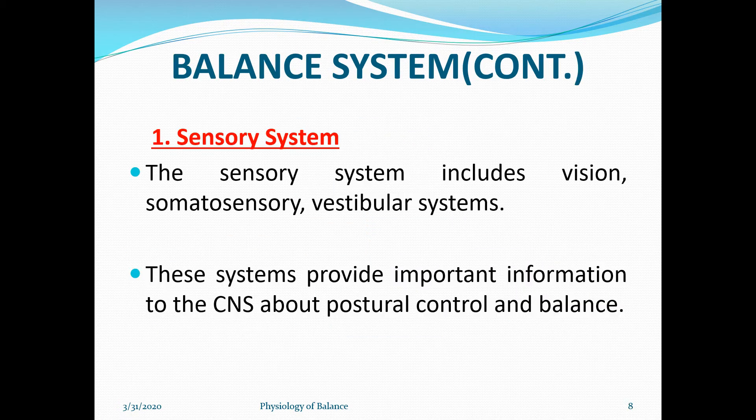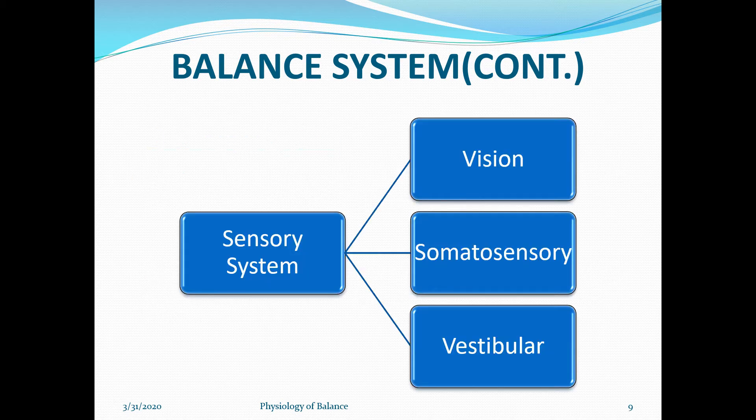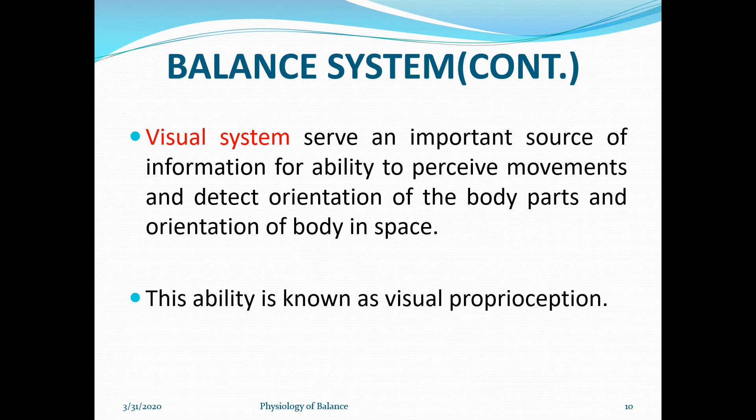The sensory system includes vision, somatosensory, and the vestibular system. These systems provide information to the CNS about postural control and balance. We will see all three in detail: first vision, second somatosensory, and third vestibular.